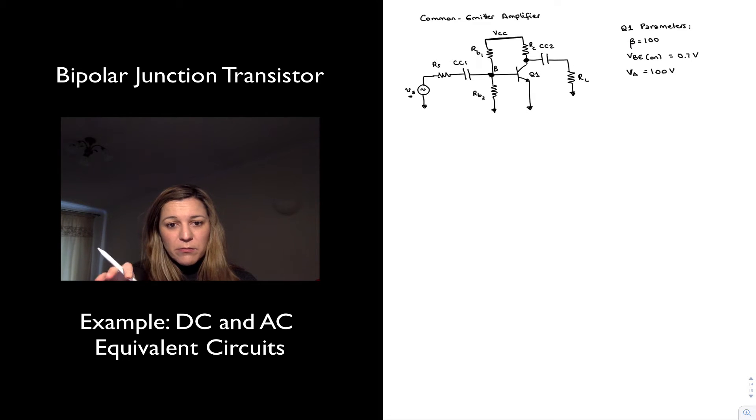We want the DC values around the transistor to be set to whatever we decided, the Q point we decided, so that we will be in the linear region of operation. This capacitor, CC1, allows us to filter through the AC portion of the signal, or let through the AC portion of that input signal, and filter out the DC component of that signal.